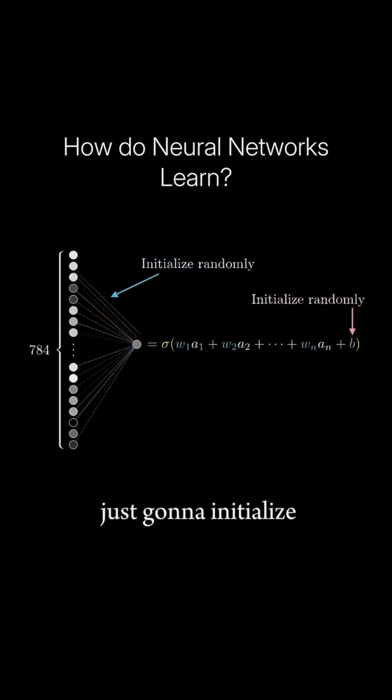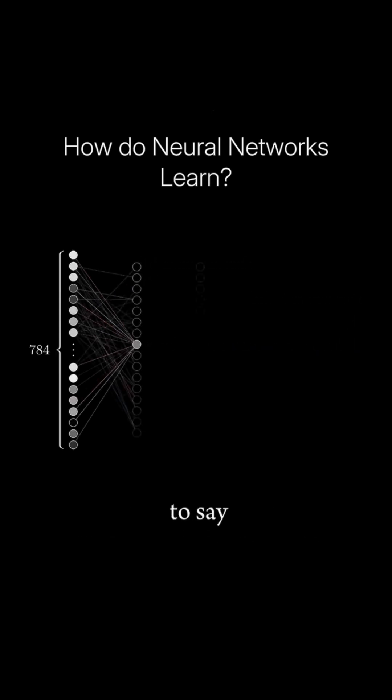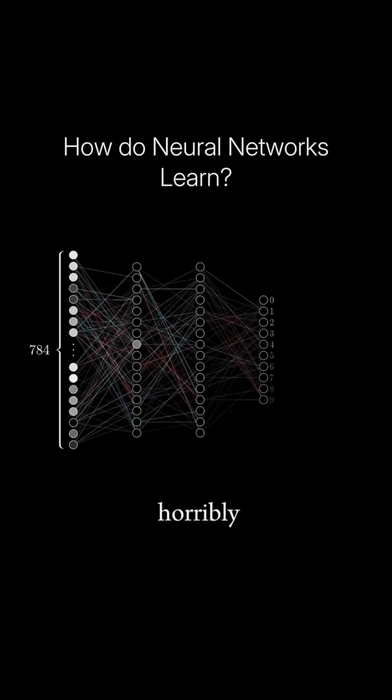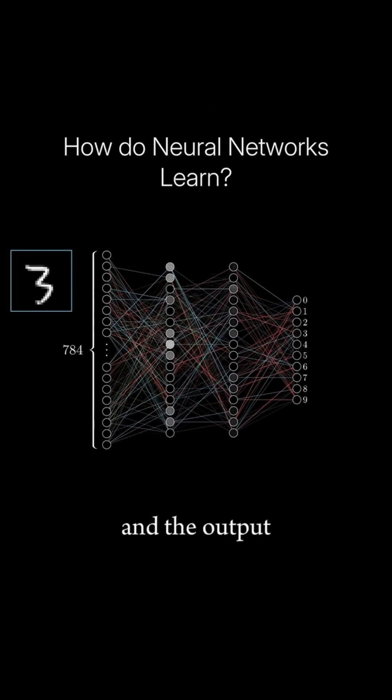And to start things off, we're just going to initialize all of those weights and biases totally randomly. Needless to say, this network is going to perform pretty horribly on a given training example, since it's just doing something random. For example, you feed in this image of a 3, and the output layer just looks like a mess.